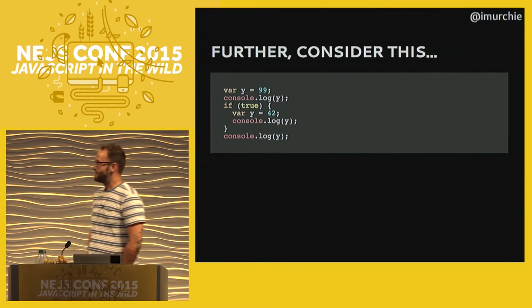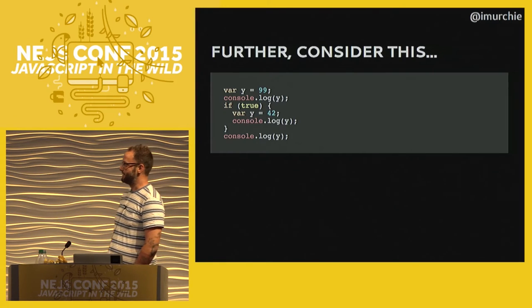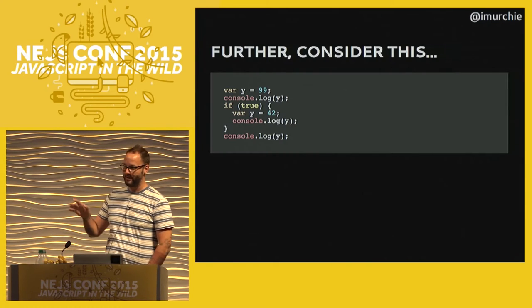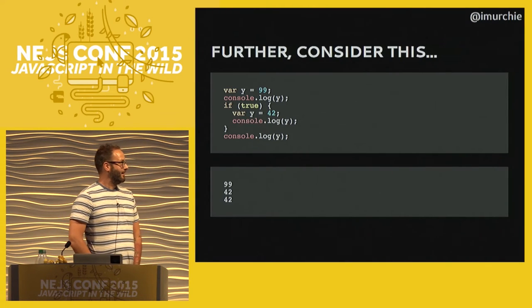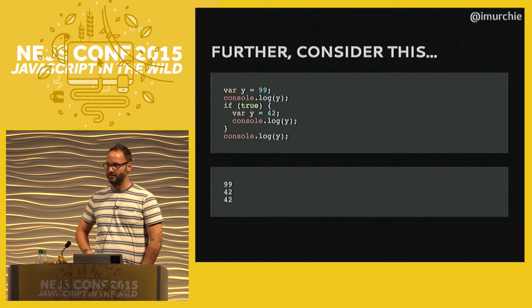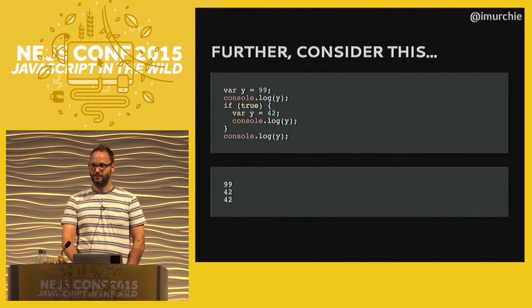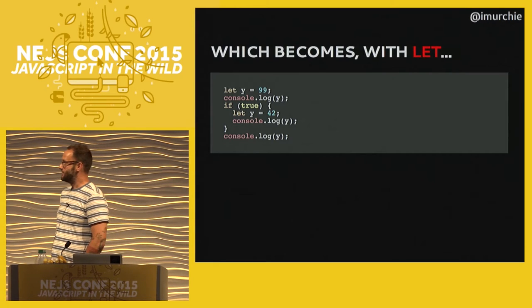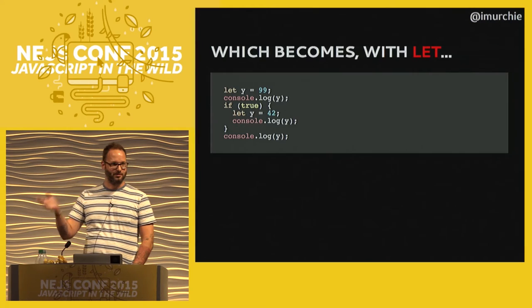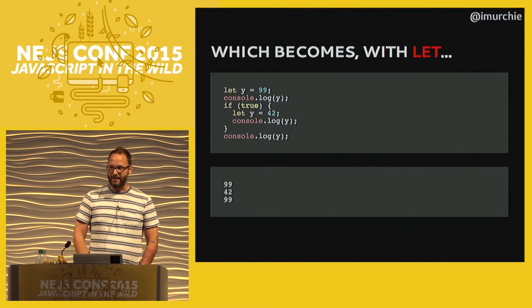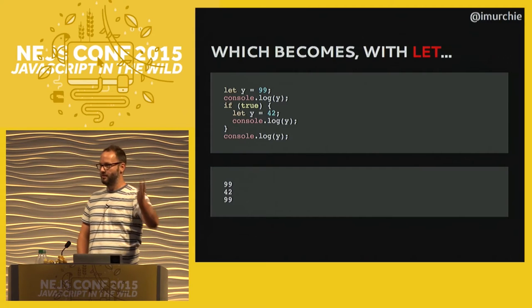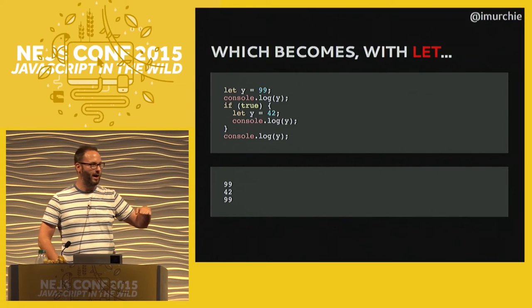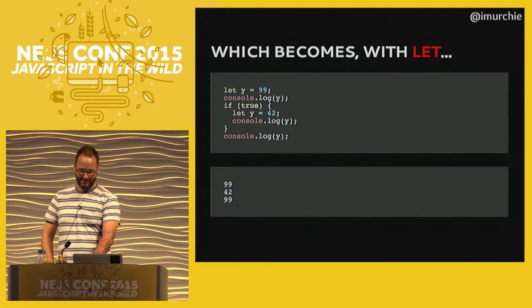Going back to `var` with an if-block: if you're coming from C you'd expect certain scoping behavior, but in JavaScript without strict mode what you get is the original 99 printed by the first console.log, then it changes to 42 and remains 42 — no shadowing. But with `let`, that second `let` is in a different scope altogether, so you get the original 99, a new variable `y` shadowing the original with value 42, and when you break out of that scope you're back to the original `y`.